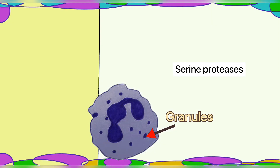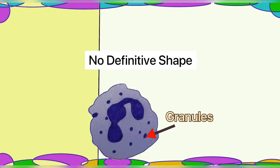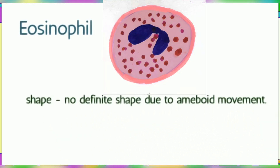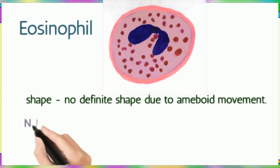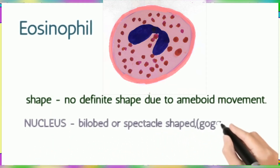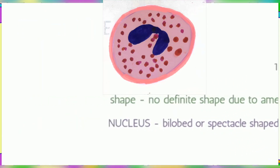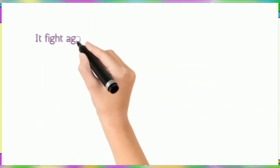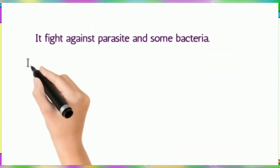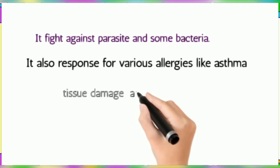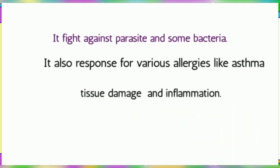Neutrophils show no definitive shape since they exhibit amoeboid movement. Eosinophils have a bi-lobed or spectacle/goggle-shaped nucleus, and constitute 1 to 3% of white blood cells. Their granules contain various chemicals and enzymes. Eosinophils are involved in parasitic and bacterial infections, and are responsible for tissue damage and local inflammation in diseases like asthma.